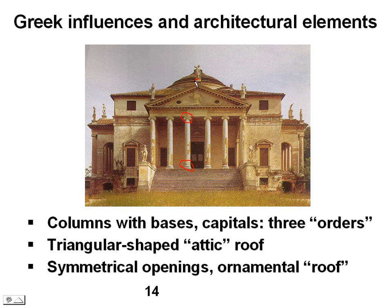A triangular shaped roof like this. However, these are not acroteria — these statues are something from a later age. The Greeks didn't put statues at those points on the roof. And symmetrical openings with an ornamental roof, like a symmetrical opening one on that side and one on this side, with a little bit of a roof that sort of hints to the main roof here.